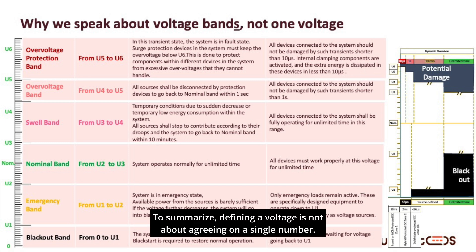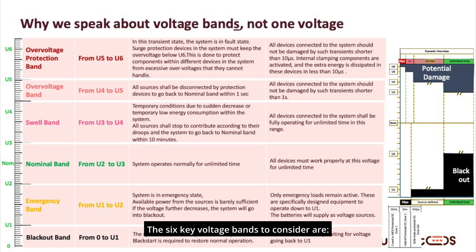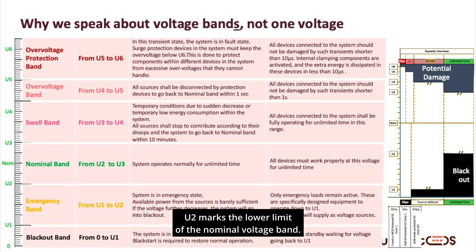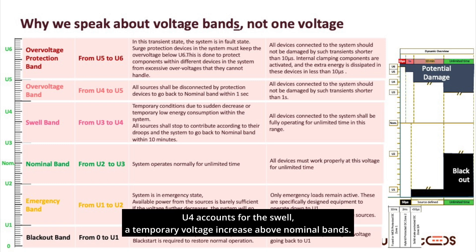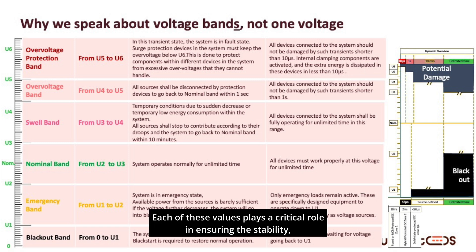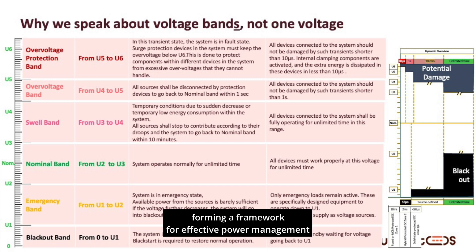To summarize, defining a voltage is not about agreeing on a single number — it's a spectrum of values that must be carefully defined, particularly when dealing with electronic protection systems. The six key voltage bands to consider are: U1, which represents the blackout state and the voltage required for a black start to energize the microgrid; U2, the lower limit of the nominal voltage band; U3, the upper limit of the nominal voltage band; U4, which accounts for the swell — a temporary voltage increase above nominal bands; and U5 and U6, which outline the range where clamping systems come into play to protect against transient overvoltages. Each of these values plays a critical role in ensuring the stability, safety, and efficiency of a DC microgrid, forming a framework for effective power management and protection.